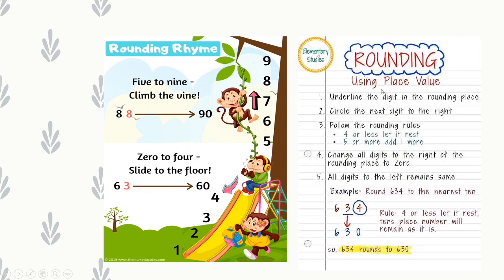Steps to round numbers using place value, with example: Round 634 to the nearest 10. Step 1: Underline the digit in the rounding place — the digit in the 10's place is 3, so underline 3. Step 2: Circle the next digit to the right — that is 4. Step 3: Follow the rounding rule — '4 or less, let it rest.' So 634 rounded to the nearest 10 is 630.